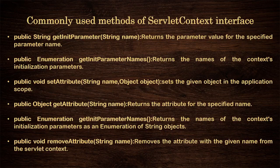Public Enumeration getInitParameterNames() — returns the names of the context initialization parameters. Public void removeAttribute(String name) — removes the attribute with the given name from the Servlet Context.